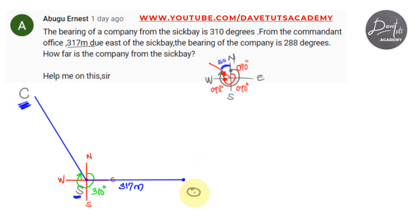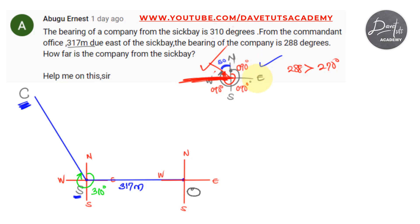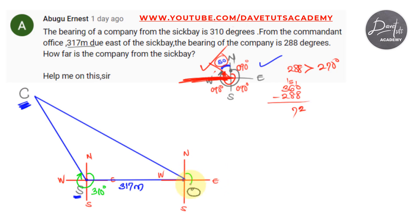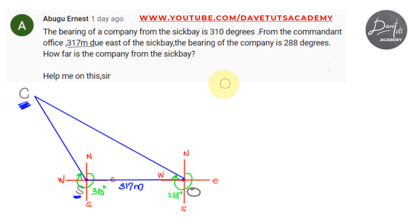The bearing of the company from the office of the commandant is given as 288 degrees. We draw the four cardinal points at O — north, south, east, and west. Since 288 degrees is greater than 270, it lies in the fourth quadrant. To find the remaining angle, we subtract 288 from 360, which gives us 72 degrees. So we measure 72 degrees from the north. The 288-degree bearing is less than the 310 degrees measured initially, and this distinction will help us solve the question.